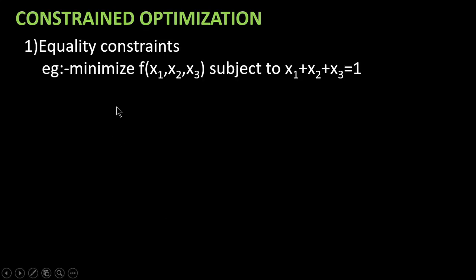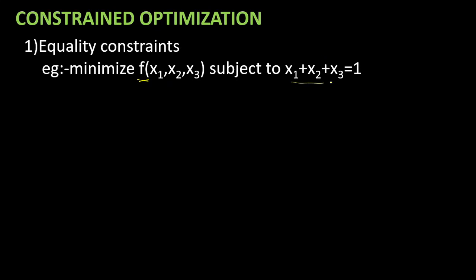Equality constraints: for example, minimize the function f of x1, x2, x3 subject to x1 plus x2 plus x3 equal to 1. Here we have an equality condition. We have to minimize the function f, and when we minimize f, this equality condition will be satisfied. That is equality constraints.